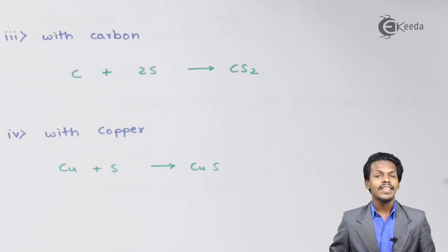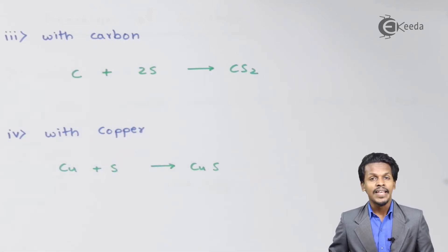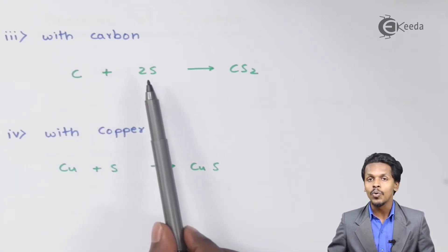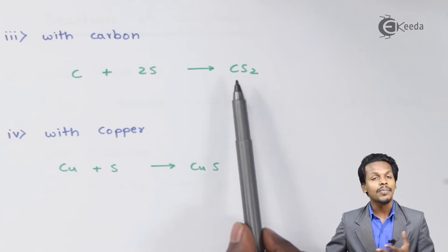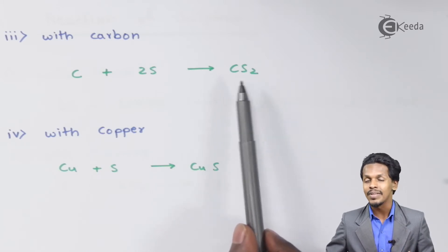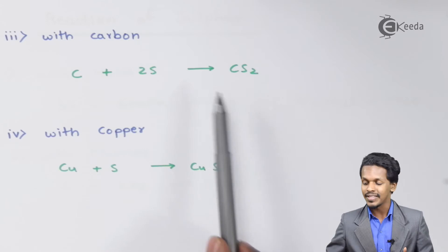So talking about the next reaction, the next reaction is with Carbon. So in this case, Carbon is heated along with 2 moles of Sulphur, and the product that we get is Carbon Sulphide. So this requires a high temperature for the product to form.